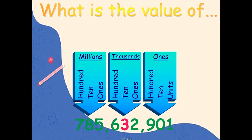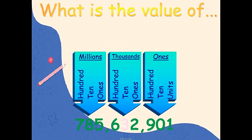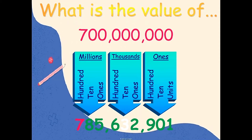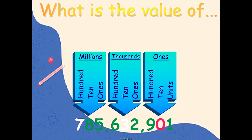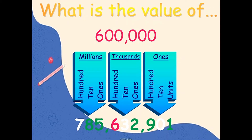The value of 3 is thirty thousand — three times ten thousand. The value of 7 is seven hundred million — seven times one hundred million. The value of 0 is zero — zero times ten equals zero. The value of 6 is six hundred thousand — six times one hundred thousand equals six hundred thousand.